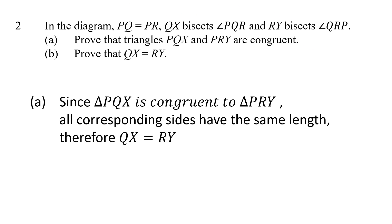Now prove that QX equals RY. That's easy because we already proved in part A that triangle PQX is congruent to triangle PRY. If the two triangles are congruent, then all corresponding sides have the same length. Therefore QX equals RY.